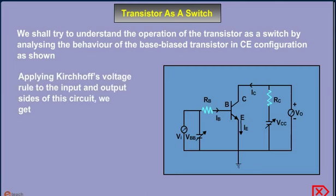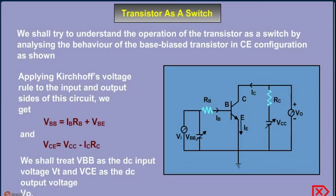Applying Kirchhoff's voltage law to the input and output side of the circuit, we get the equations VBB equals IB·RB plus VBE and VCE equals VCC minus IC·RC. We shall treat VBB as the DC input voltage VI and VCE as the DC output voltage VO.